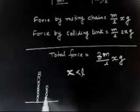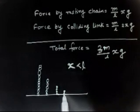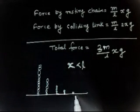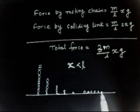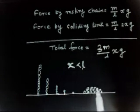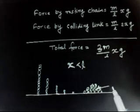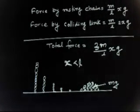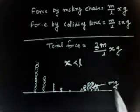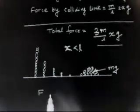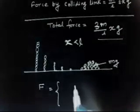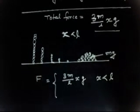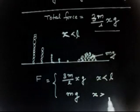After some time, the chain progressively piles up on the table. When X equals L, all of the chain has fallen and no more links are colliding. At that point the force is simply Mg, since only the total resting mass remains. So the force function is 3MgX/L for X less than L, and Mg for X greater than or equal to L.